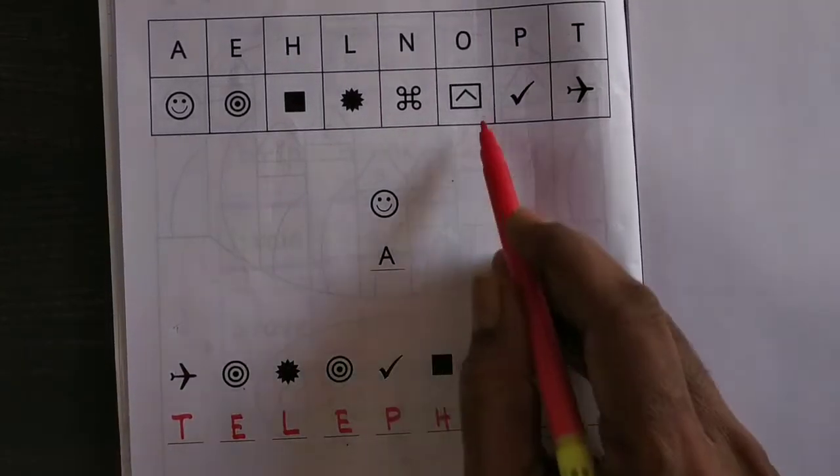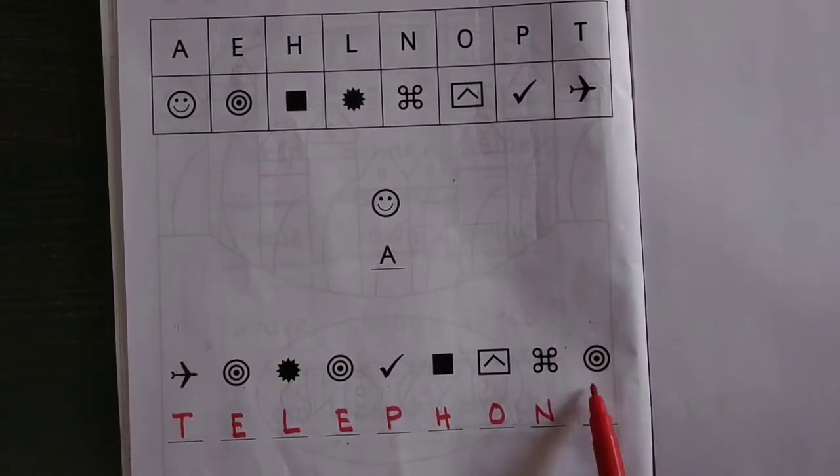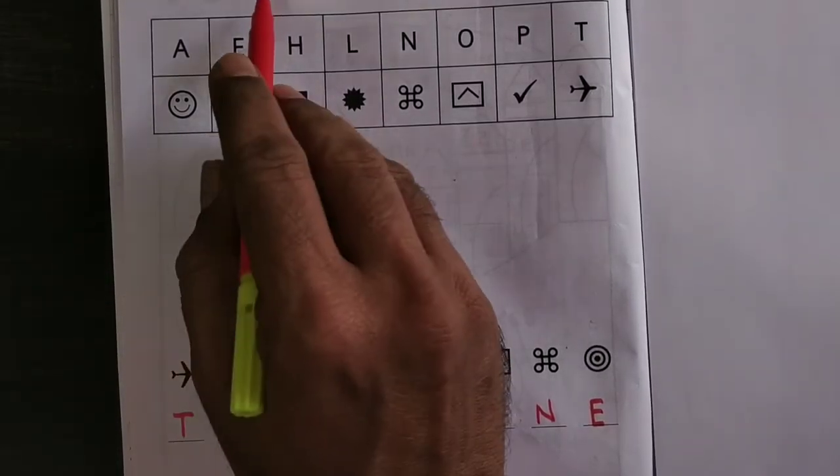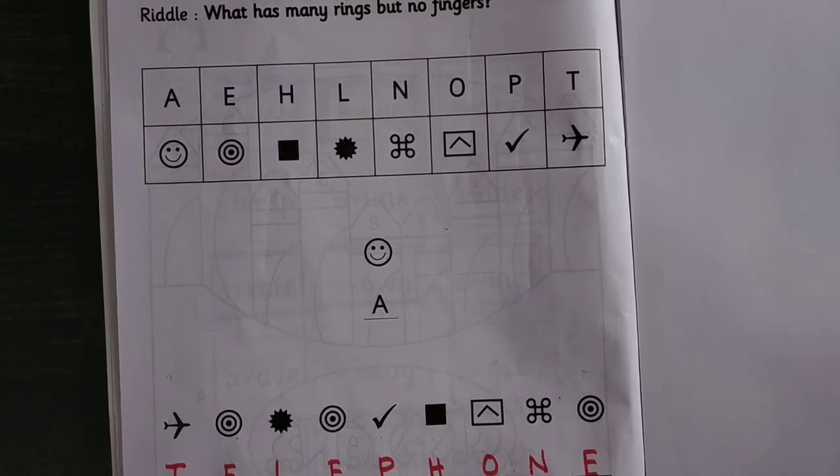O you have to write here, N you have to write here, and here E. So what has many rings but no fingers? The answer is telephone.